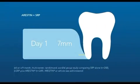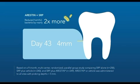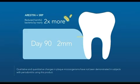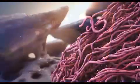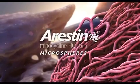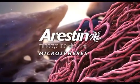Three months after treatment, the addition of Arrestin to SRP has been shown to significantly reduce pocket depth compared to SRP alone. In the fight against periodontal disease, extend the reach of SRP by adding Arrestin.